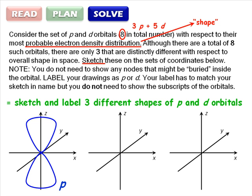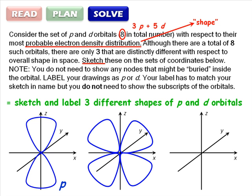d orbitals have two angular nodes. 4 of the 5 d orbitals have two nodal planes at right angles to each other, and these generate orbitals with 4 lobes resembling a 4-leaved clover. I'm going to draw the dxz orbital because this one is easiest to draw as it lies in the same plane as the plane of the page.